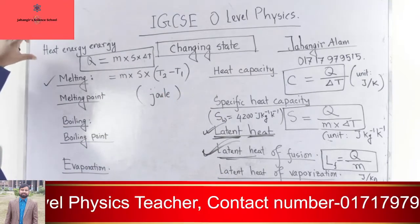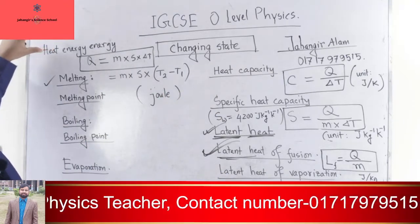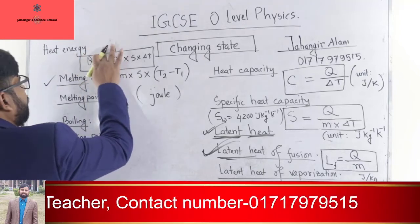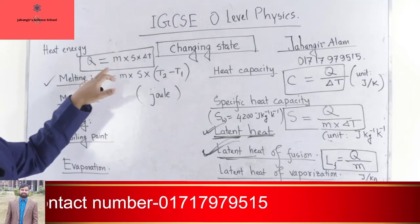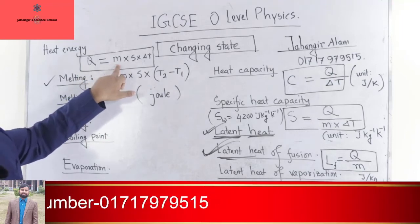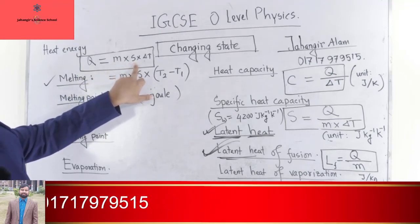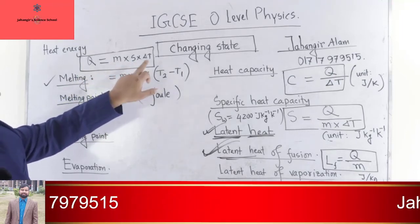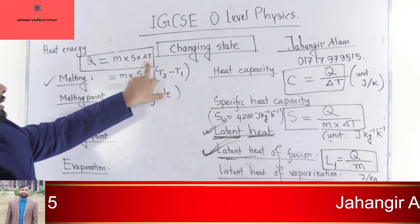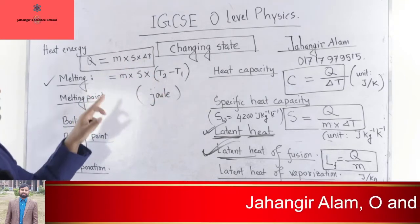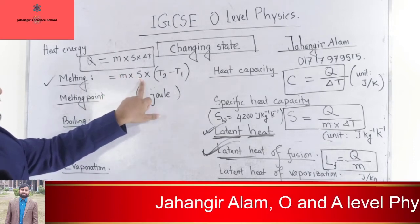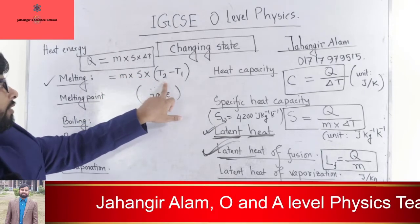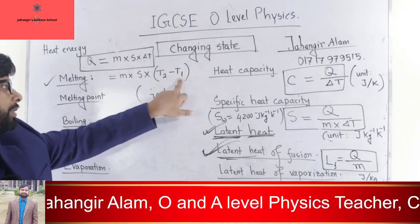To calculate heat energy transfer, the formula is Q equals M into S into ΔT, where M is the mass, S is the specific heat capacity, ΔT is the change in temperature (final temperature minus initial temperature). The unit of heat energy transfer is Joule.